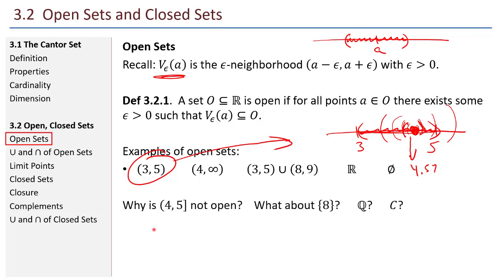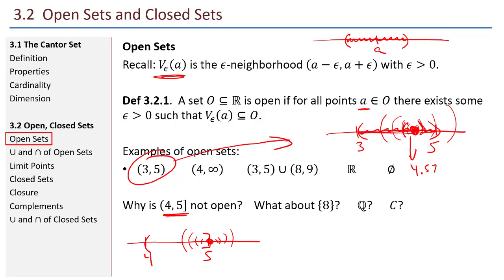Why is the interval from 4 to 5 that does include 5 not open? Here's 4, there's 5. I don't include 4, but I do include 5. Since 5 is in the set, I draw my point right at 5 — 5 is like the little a in the definition. I start making epsilon neighborhoods about 5, and no matter how small I make them, they will always contain points outside of the interval. I'll never get an epsilon neighborhood entirely contained within the interval. Because of 5 — 5 is the offending point — this interval is not open.